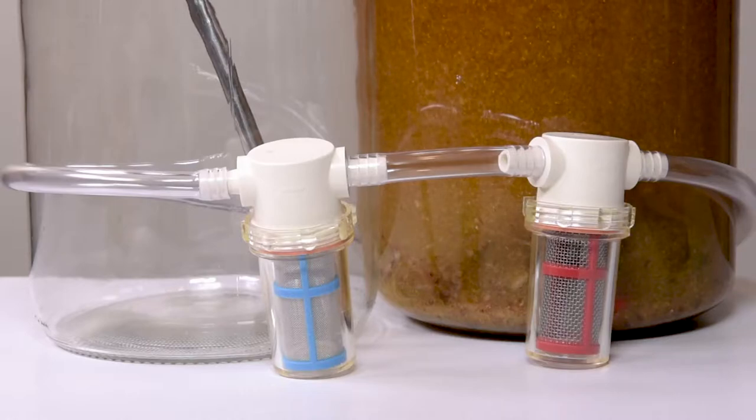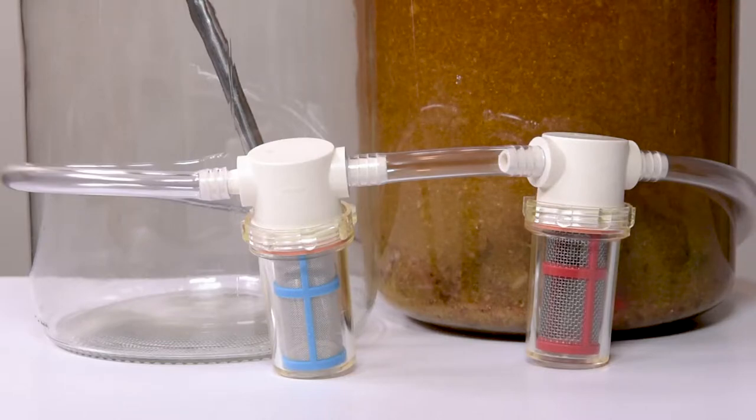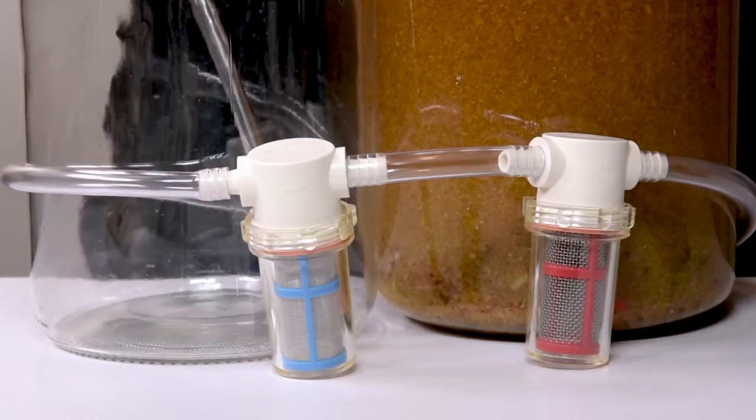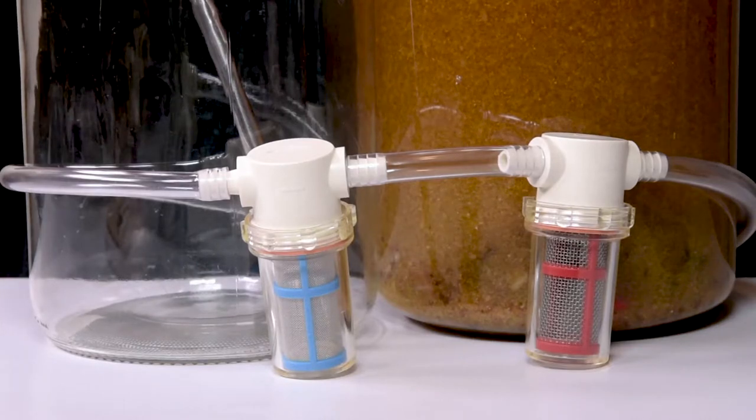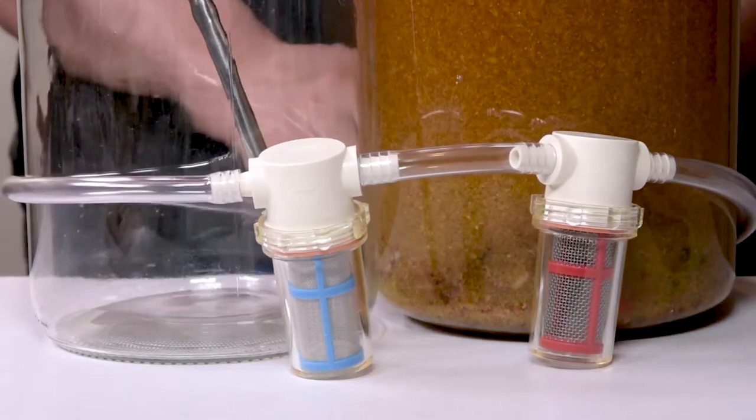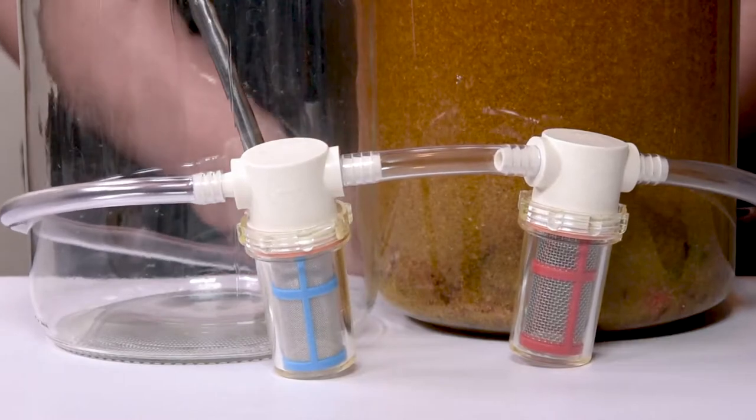In the red screen we have a 915 micron filter and in the blue we have a 304 micron filter. Before you get excited, neither one or any of the filters we test today are going to be able to filter out yeast. To do that you would need a 2 micron filter and that's not really what these are designed to do.